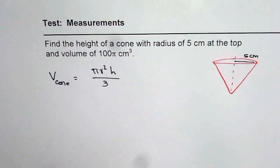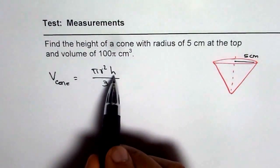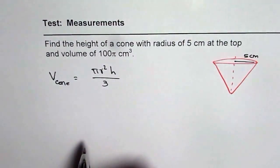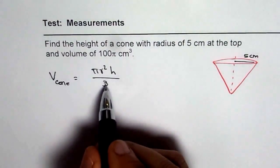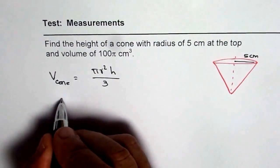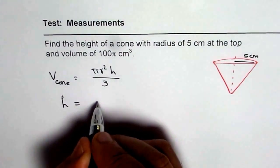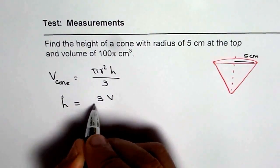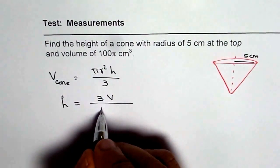We need to find the height. Since we need to find the height, we need to rearrange this formula. So what we can do is, we can write what is height equals to. Height equals 3 times volume divided by πr².